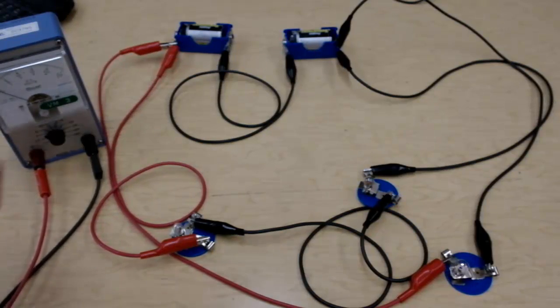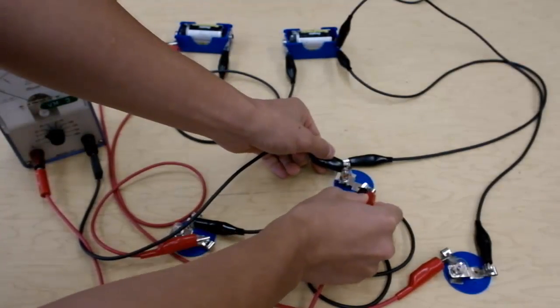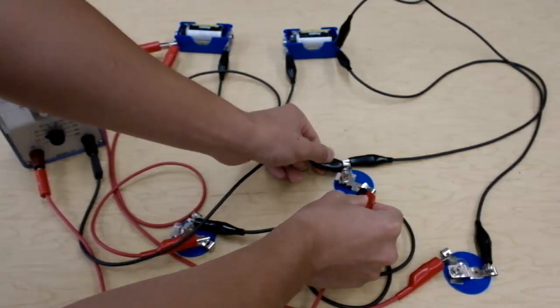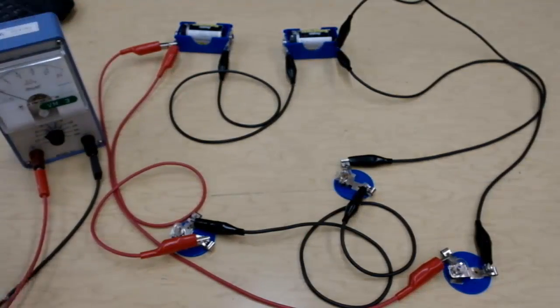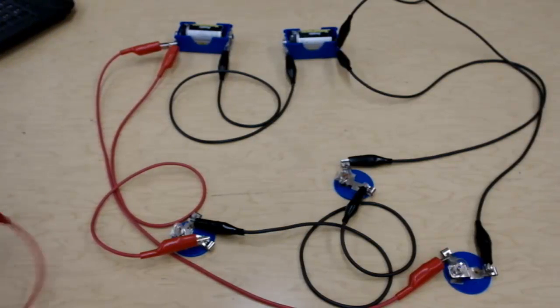You kind of use these two ends as kind of probes to go around whatever you want the voltage of. Say, if I want the voltage of this light bulb, I take my two ends and I go at the two ends of my component just like that. Then I should be reading some amount of voltage, the amount of voltage that goes across that light bulb. That's a simple voltmeter.